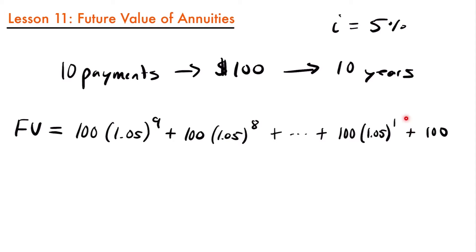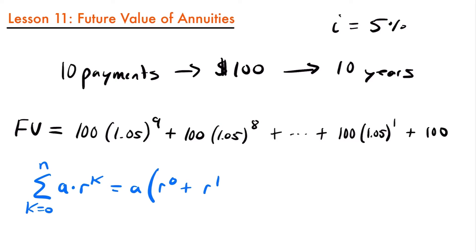In order to find the future value of an annuity — a series of payments — let's recall a concept from calculus: a geometric series. Consider this series starting at k equals zero, going up to a value of n, for some constant a multiplied by r to the power of k. If we write it out, we'd have a multiplied by r to the zeroth power, plus r to the first power, plus r squared, and so on all the way up to r to the nth power.